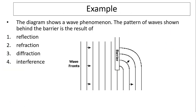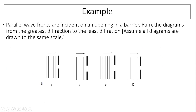Let's take a look at this example. The diagram shows a wave phenomenon — the pattern of the wave shown behind a barrier is a result of a wave going over a barrier and bending. This phenomenon is called diffraction. Now, given parallel wavefronts incident on an opening in a barrier, rank the diagrams from greatest diffraction to least diffraction, assuming all diagrams are the same scale. Diffraction depends on the relative size of the wavelength and the opening. When they are comparable, you have the most diffraction. In diagram D, the distance between crests is about the same as the size of the opening, so D has the biggest diffraction. Diagram C has the least diffraction because the wavelength is much smaller than the size of the opening.